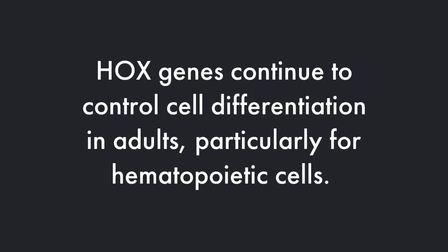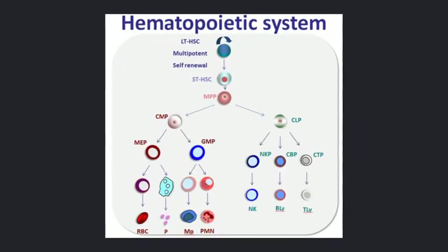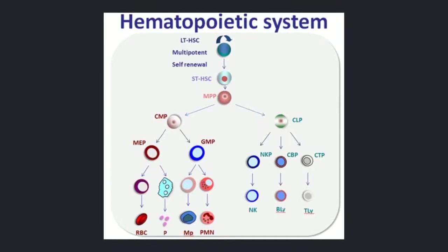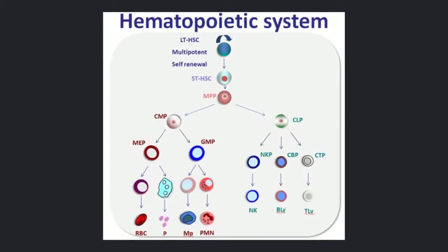Hox genes aren't just important in embryos — they're also important in adults for differentiating hematopoietic cells and continuing differentiation for all the future needs that adults may have in regrowing cells to cover up injuries, damage, and things of that nature. Here you can see all the variety that these hematopoietic cells have in transforming into different kinds of cells that any adult may need.